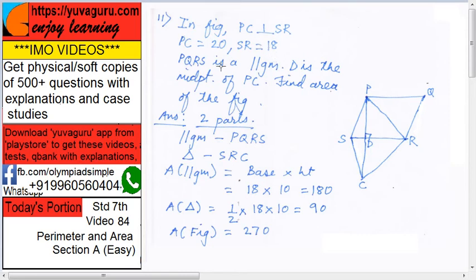PQRS is a parallelogram. D is the midpoint of PC. Find the area of the full figure.